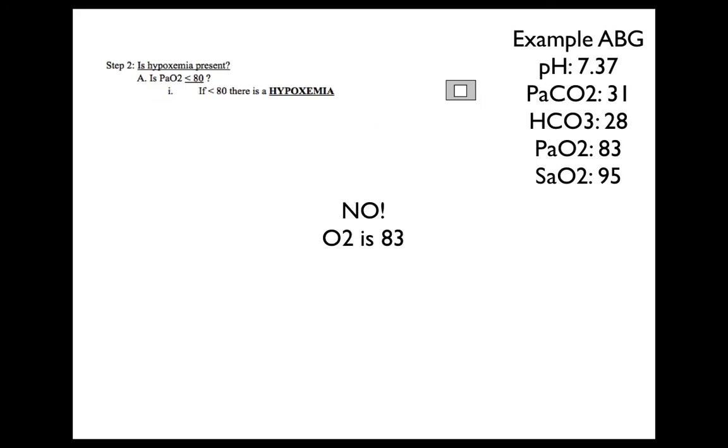Step two: is hypoxemia present? If the O2 is less than 80%, hypoxemia is present. When interpreting our example ABGs, we're going to assume that hypoxemia is not present on any of the following examples.